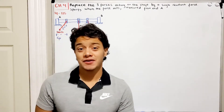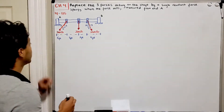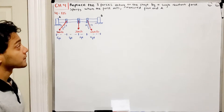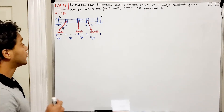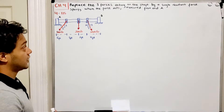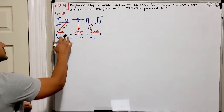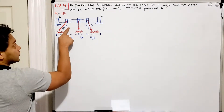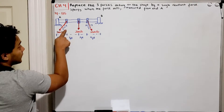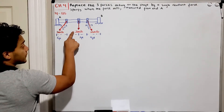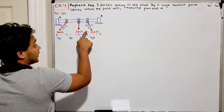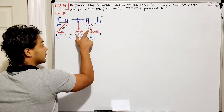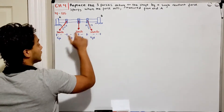Welcome back everyone to Learning by Teaching. We're in statics and we're going to do problem 4.115. It says: replace the three forces acting on the shaft by a single resultant force, specify where the force acts, and measure from point A. We have a shaft from A to B, with a 500-pound force described by a 3-4-5 triangle, 200 pounds straight down, and a 260-pound force described by a 5-12-13 triangle.